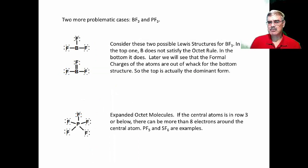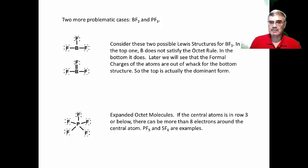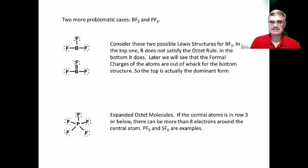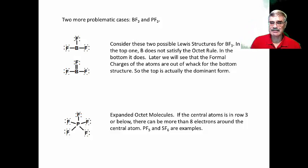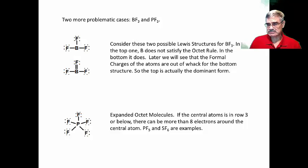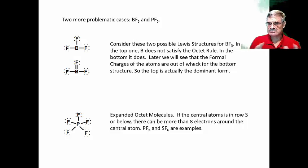Two more problematic cases. Boron trifluoride, BF3, has VT = 24. Boron is much less electronegative than fluorine, so it goes in the middle with three fluorines around it. Distributing the 24 electrons, with extra electrons placed around the terminal fluorines, gives the initial Lewis dot structure — but boron only has six electrons instead of eight. A possibility is to recruit a non-bonded pair from one fluorine to form a pi bond. However, after we discuss formal charges in the next video lecture, you'll see that the structure without the double bond is actually preferred. These are problematic cases where the Lewis dot structure is not exactly what you would expect.